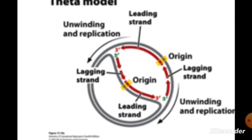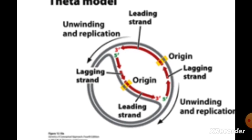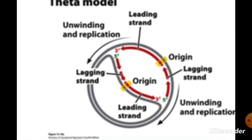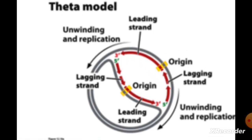Circular DNA has a single origin of replication where two replication forks originate and proceed in opposite directions. The forks expand as new daughter strands are extended during replication.